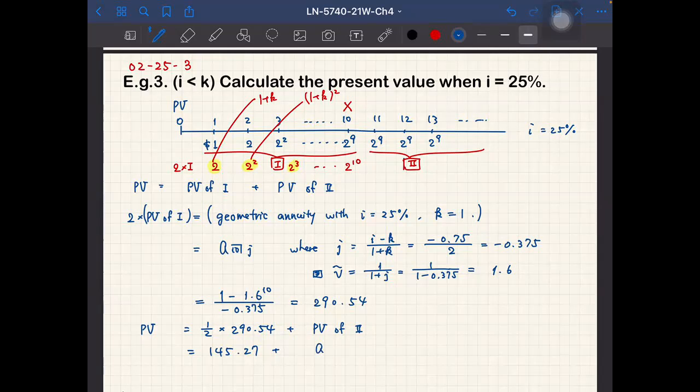So that means this is equal to 145.27 plus... okay, so 2 to the 9th power, so 2 to the 9th power times A angle infinity. So we have 10 years of discount, so 10 years of discount here.